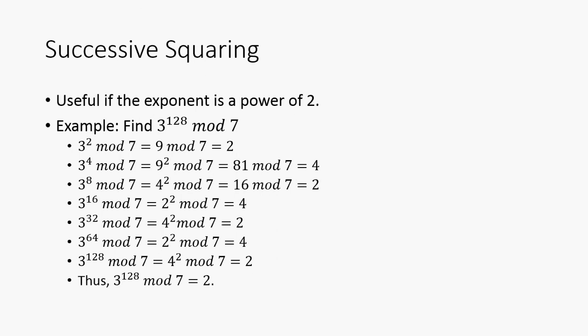So the next method I'm going to talk about is successive squaring, and it's useful if the exponent is a power of 2. For example, find 3 to the 128 mod 7. Well, first we start out with 3 squared mod 7, which is 9 mod 7, which is 2, right?